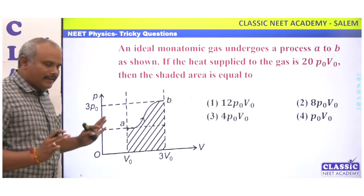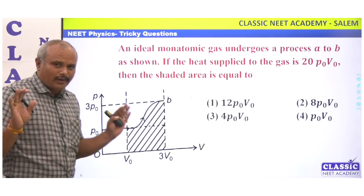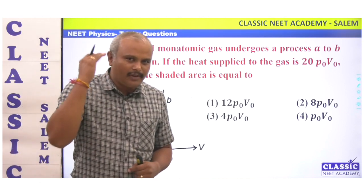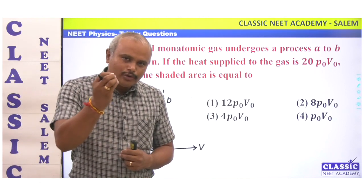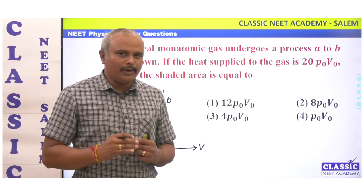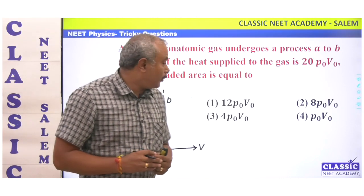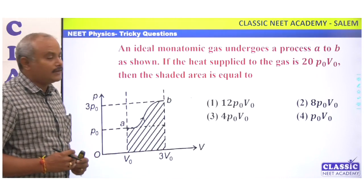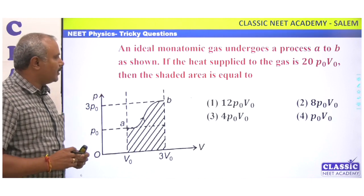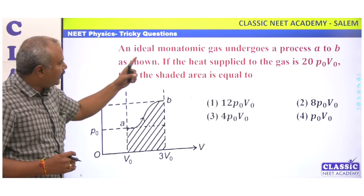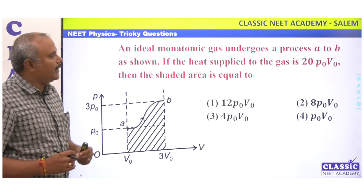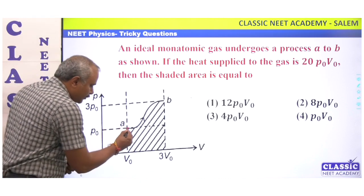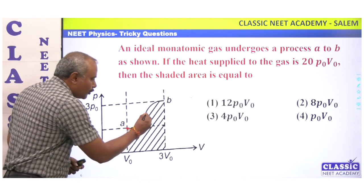We will see that in this picture there are many tricky questions — custom-made questions. In last year's NET, we will talk about some of the questions. Let's look at the ideal monatomic gas. This is thermodynamics and kinetic theory of gases. An ideal monatomic gas undergoes a process A to B, as shown in the figure.